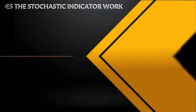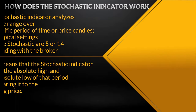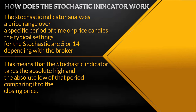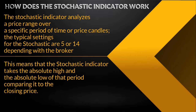How does the stochastic indicator work? The stochastic indicator analyzes a price range over a specific period of time or price candles. The typical settings for the stochastic are 5 or 14, depending on the broker. This means the stochastic indicator takes the absolute high and the absolute low of that period, comparing it to the closing price.